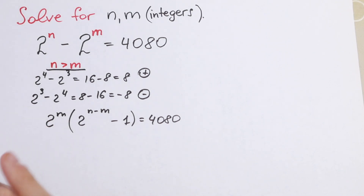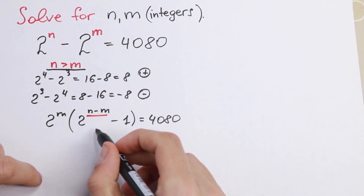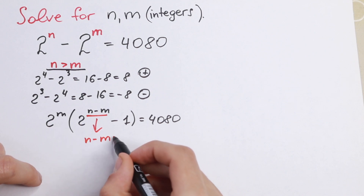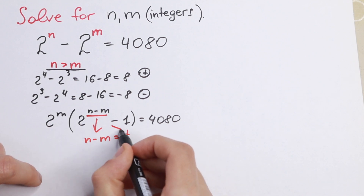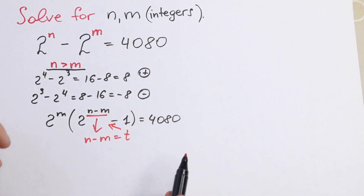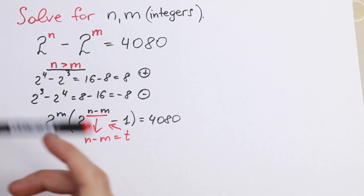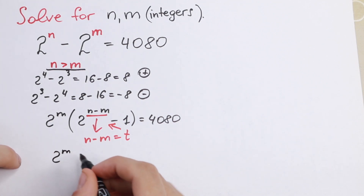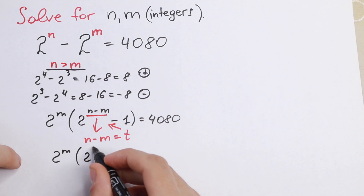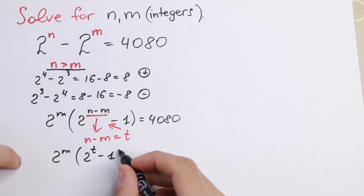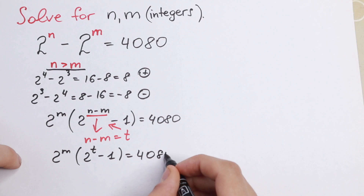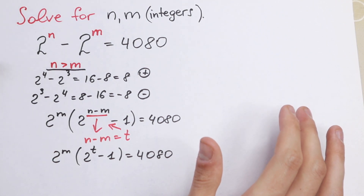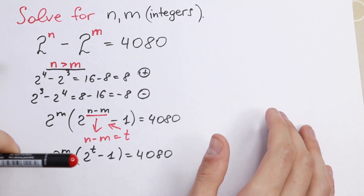Now I want to introduce a substitution: let n minus m equal t. So this power becomes t. The equation becomes: 2 to the power m, times (2 to the power t minus 1), equals 4080.